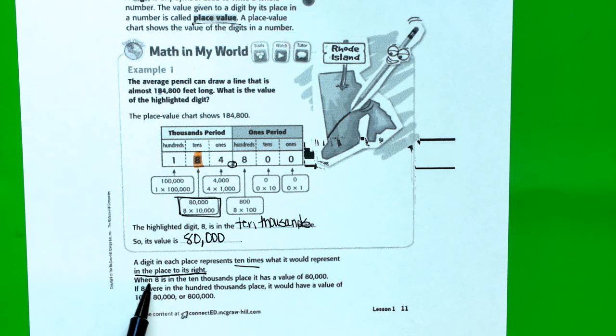So let's finish that thought. When 8 is in the ten thousands place, it has a value of 80,000. If 8 were in the hundred thousands place, it would have a value of 800,000 or 10 times the 80,000.